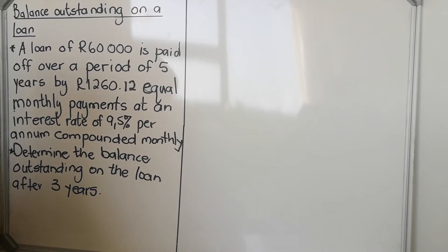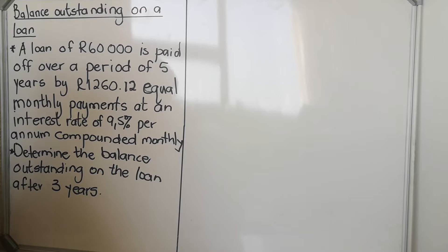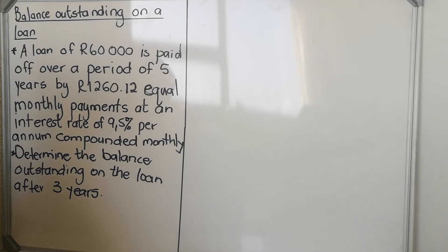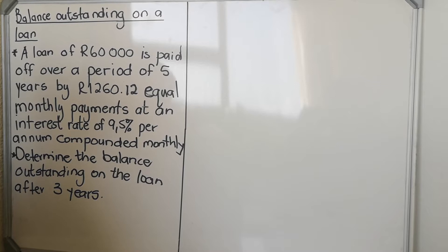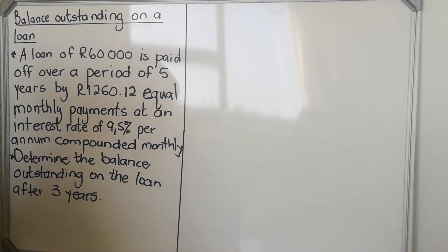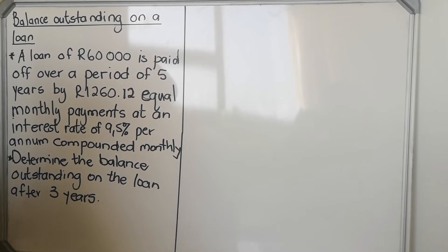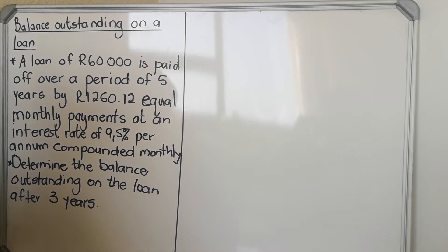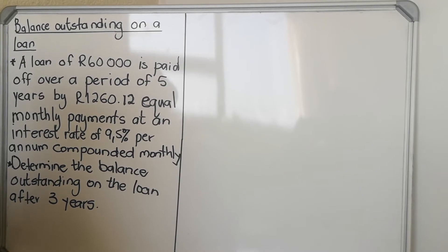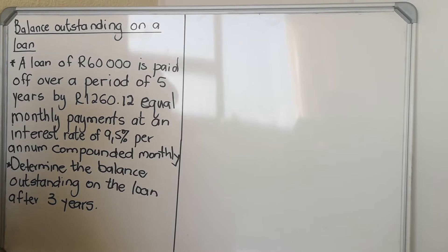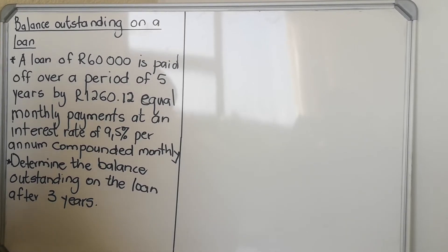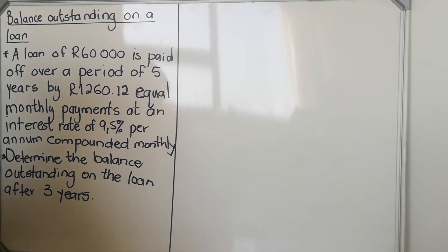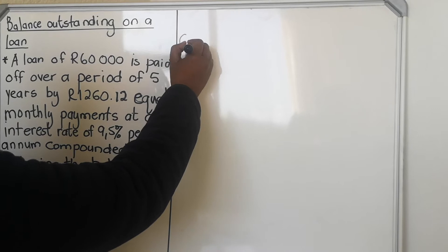Hello, this is a lesson on financial maths. We're going to look at outstanding balance on a loan. There are actually two methods for this question — I'm going to show you both and then we'll decide which one works better for you in an exam. The question says: a loan of R60,000 is paid over a period of five years by equal monthly payments of R12,600 at an interest rate of 9.5% per annum compounded monthly. Determine the balance outstanding on the loan after three years — meaning, after three years of payments, how much is left to pay?